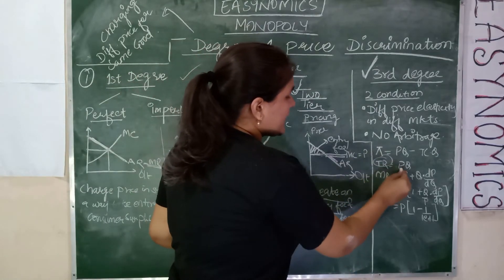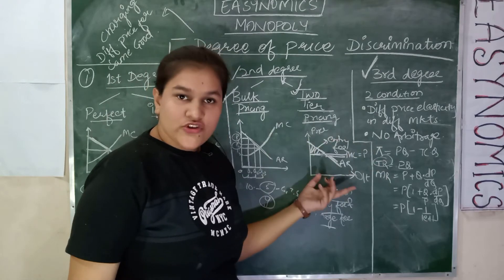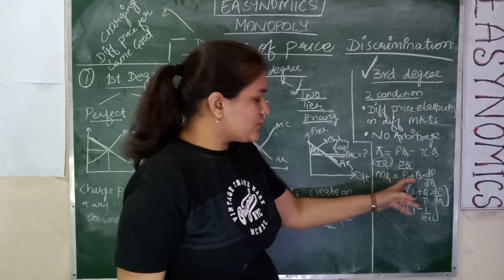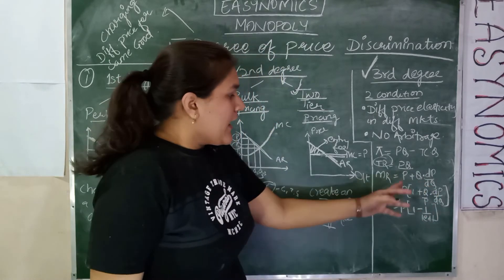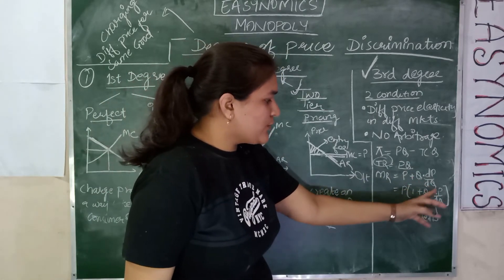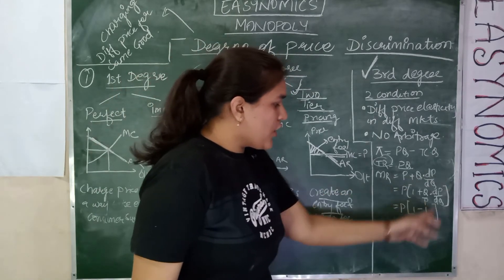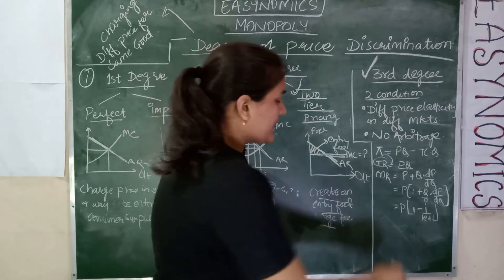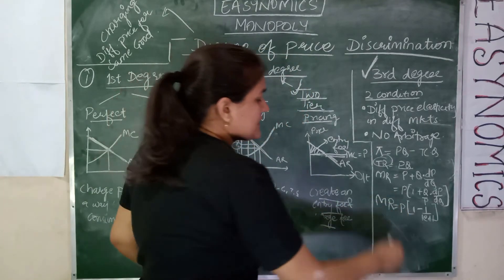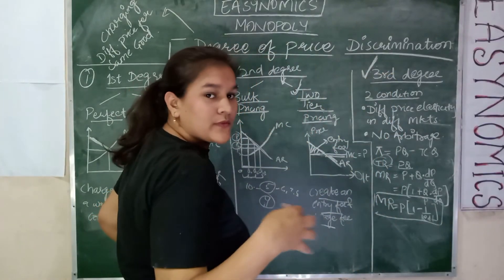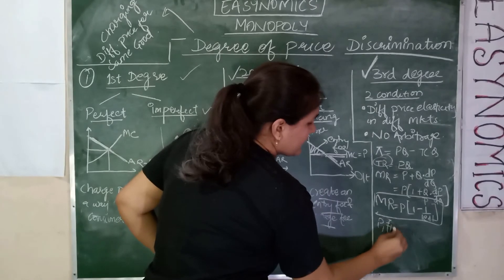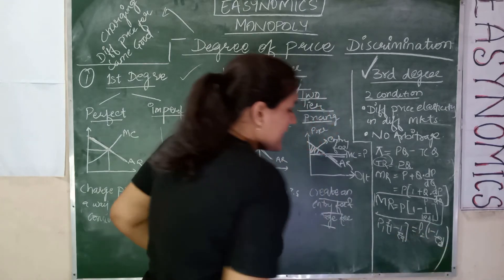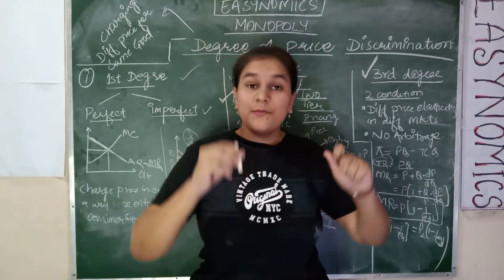Now, how does this work? Total revenue equals price times quantity. When we differentiate total revenue with respect to quantity, we get MR. Differentiating, we get: MR = P(1 + Q/P × dP/dQ). Recognizing that Q/P × dP/dQ is the inverse of the elasticity of demand, the formula becomes: MR = P × (1 − 1/Ed). In the equilibrium condition, the monopolist sets MR1 = MR2 across both markets, meaning P1 × (1 − 1/Ed1) = P2 × (1 − 1/Ed2), and charges different prices in different markets accordingly.